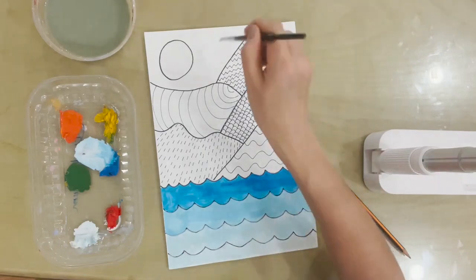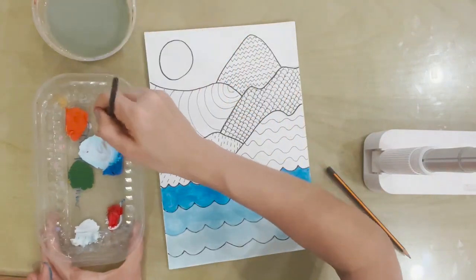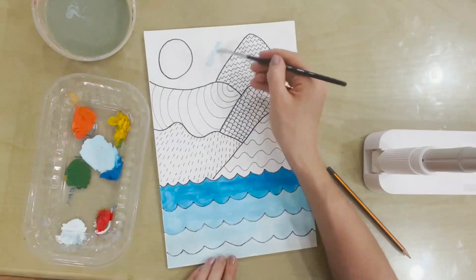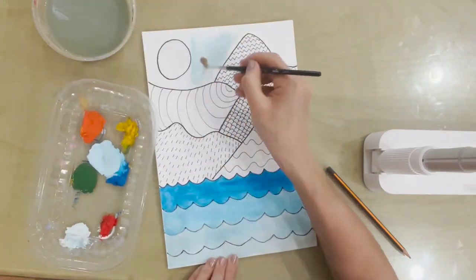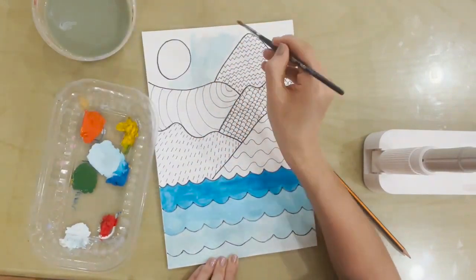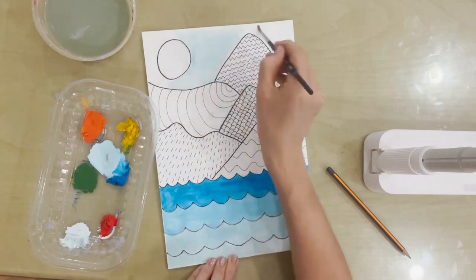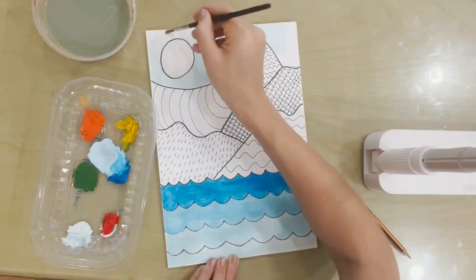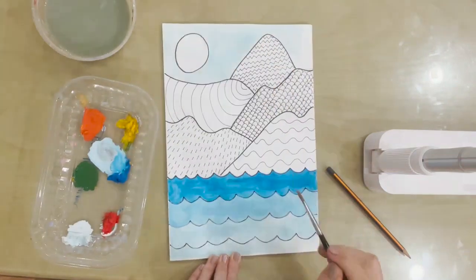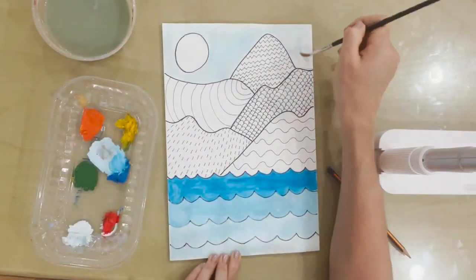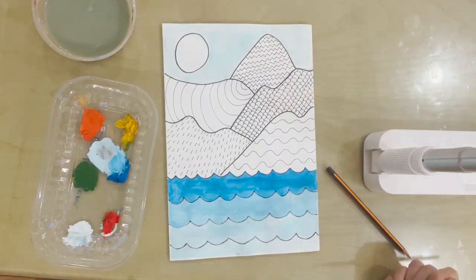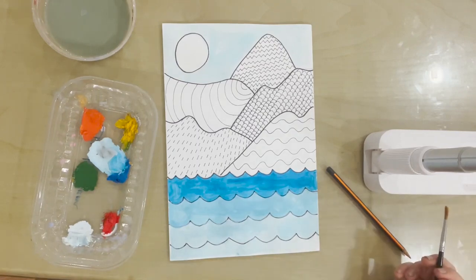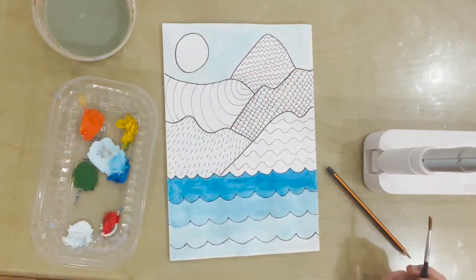And now I'm going to use the same light blue to paint in the sky. So now I have painted all of the blue areas of the painting.